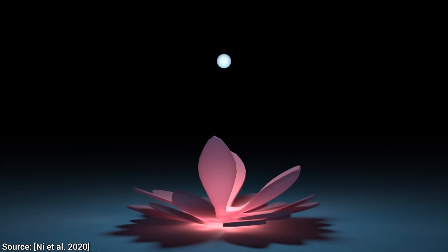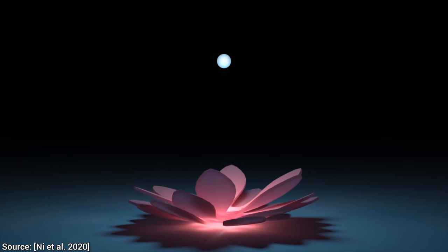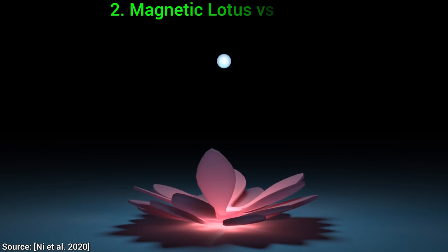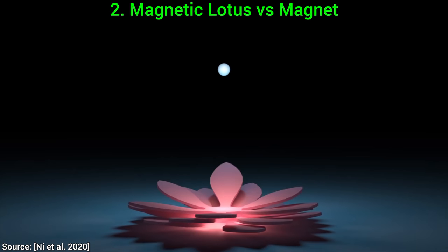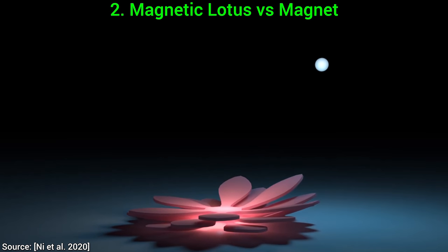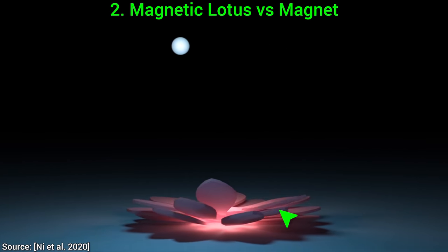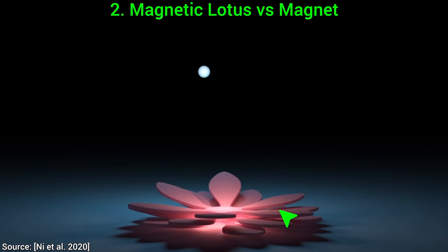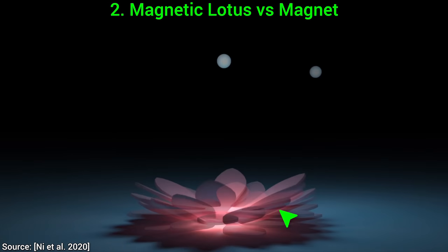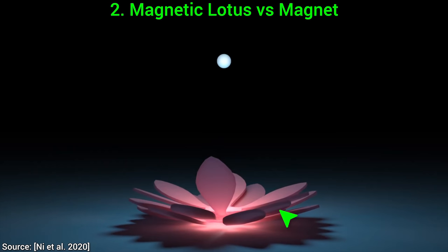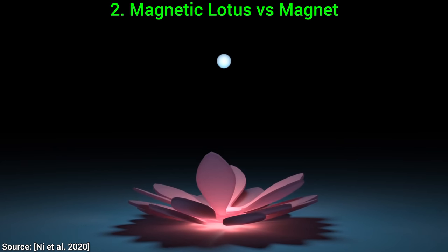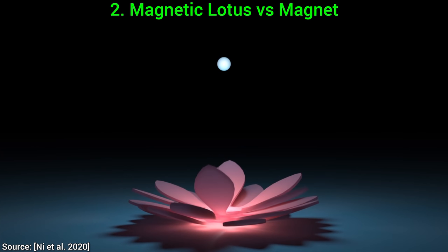Experiment number two. Deformable magnetic bodies. In other words, magnetic lotus versus a moving magnet. This one is absolutely beautiful, look at how the petals here are modeled as thin, elastic sheets that dance around in the presence of a moving magnet. And if you think this is dancing, stay tuned, there will be an example with even better dance moves in a moment.